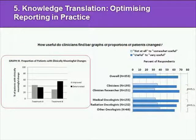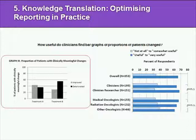This graph looks at the same type of question, exploring whether a graph of the proportion of patients showing a clinically meaningful change would be useful to clinicians. This is often the type of analysis done in a clinical trial where a minimum threshold for clinical improvement is stipulated and the proportion of patients meeting that threshold is reported. Again, some clinicians would find this useful, but about a third were less enthusiastic — and again, this enthusiasm did not seem to depend on whether the clinician was trained as a researcher or was a medical, radiation, or other type of oncologist. These fairly robust opinions create a challenge for implementing the CONSORT extension in a way clinicians will find most useful in clinical practice.